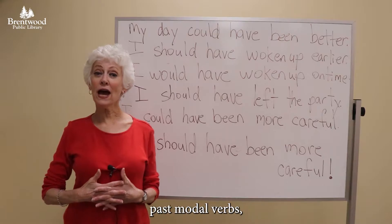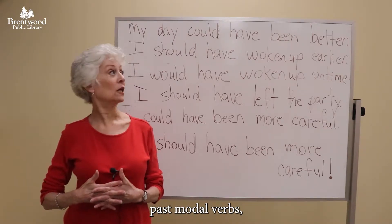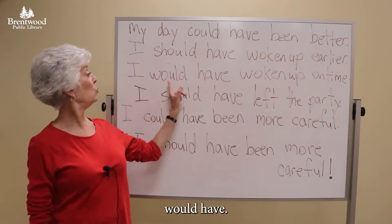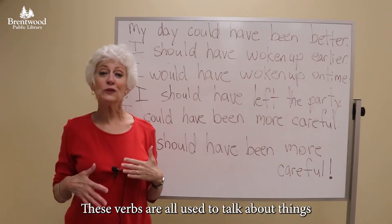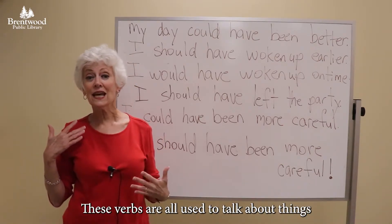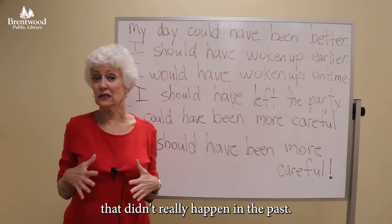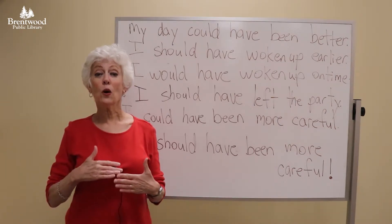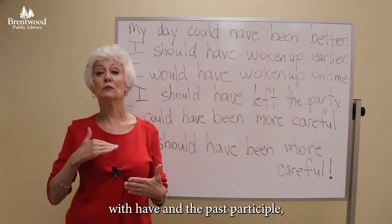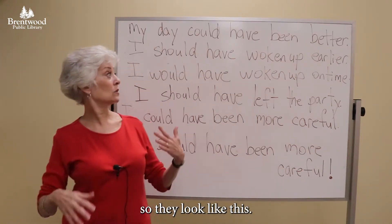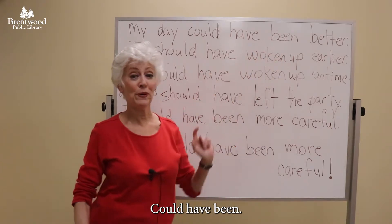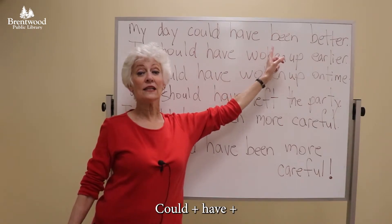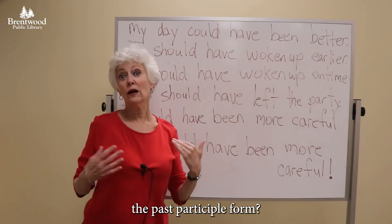Today we are looking at past modal verbs like could have, should have, would have. These verbs are all used to talk about things that didn't really happen in the past. In sentences, we use these verbs with have and the past participle. So they look like this: could have been — could plus have plus the past participle form of a verb.